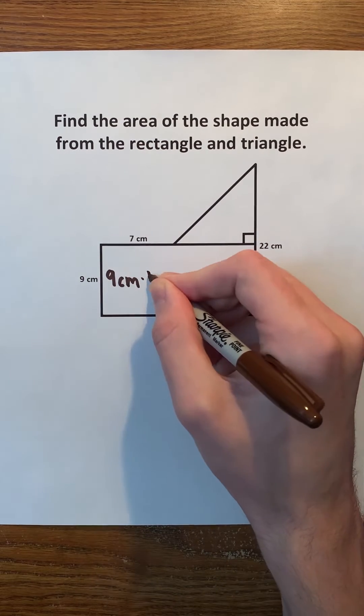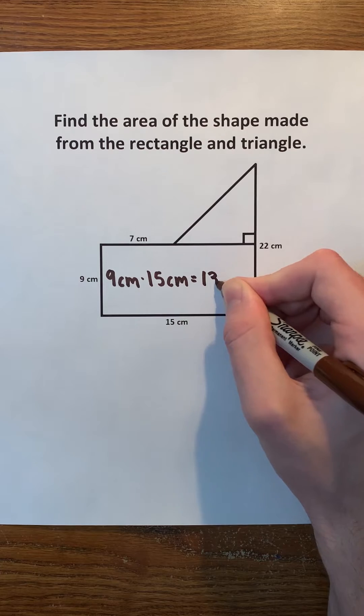So, we can multiply them to find the area. 9 times 15 is 135.